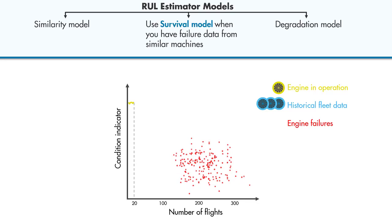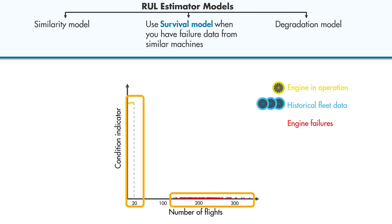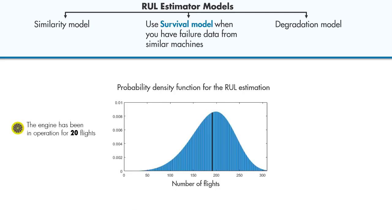If we don't have the complete histories from the fleet but have only the failure data, then we can use survival models to estimate RUL. We know how many engines failed after how many flights, and we also know how many flights the engine has been in operation. The survival model uses a probability distribution of this data to estimate the remaining useful life.